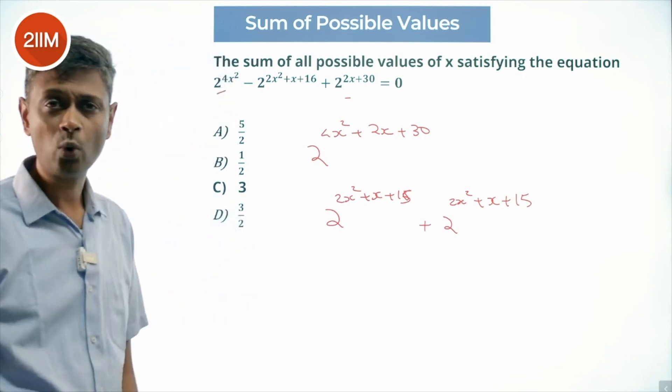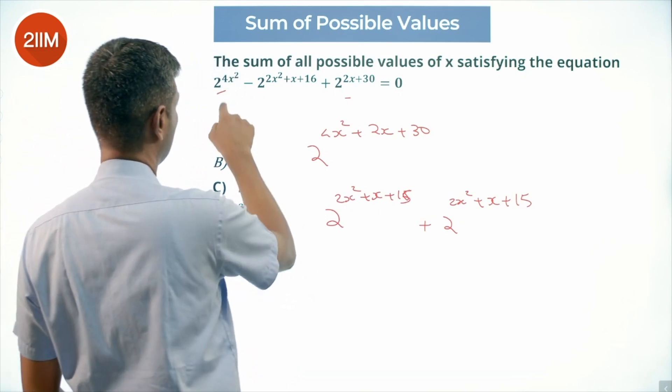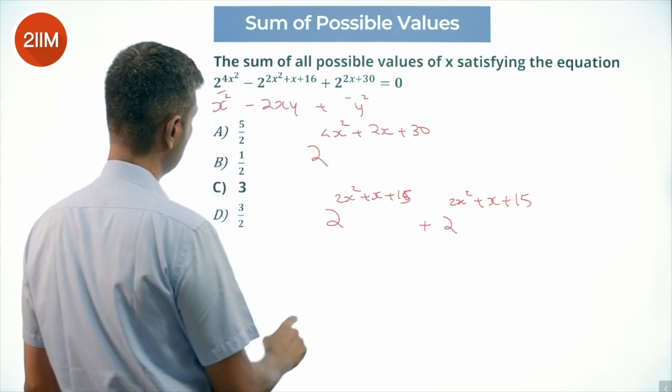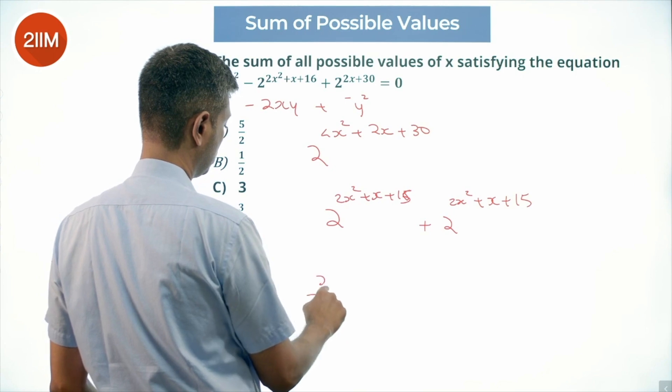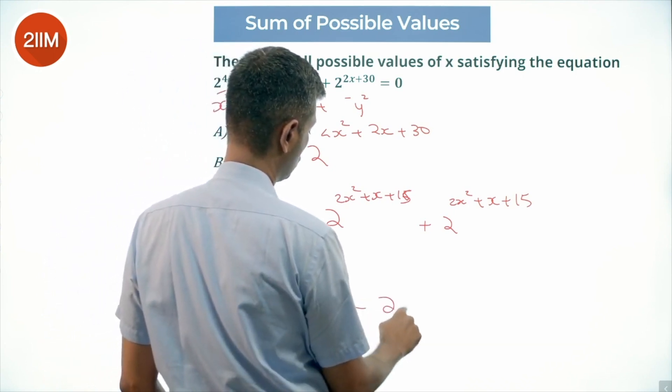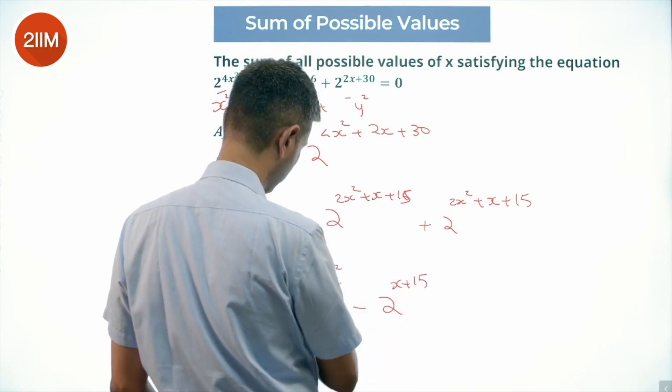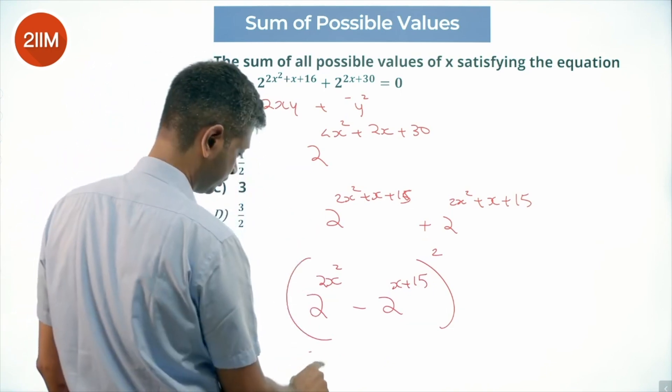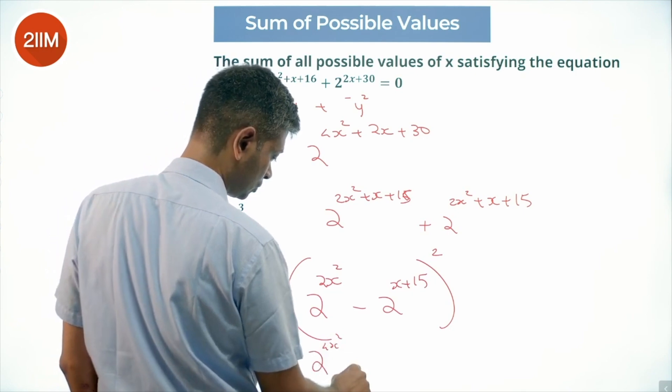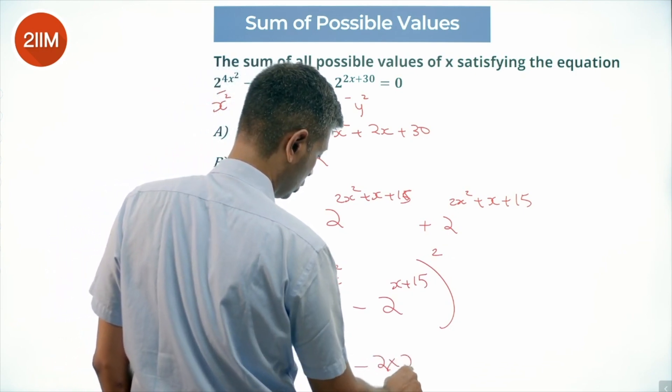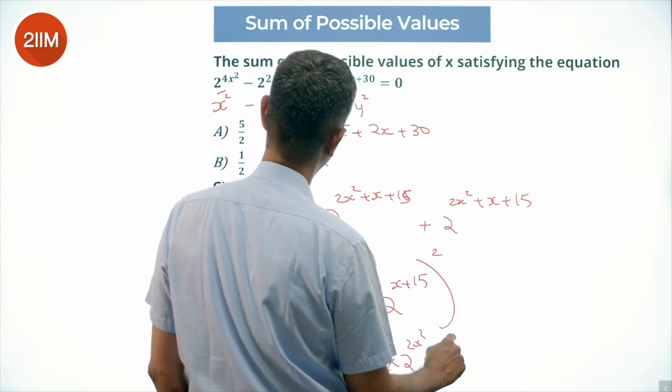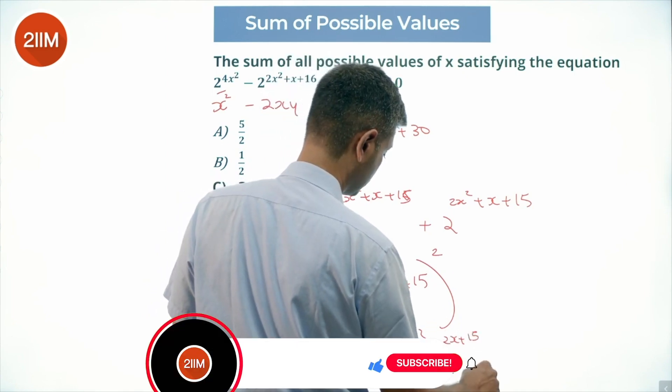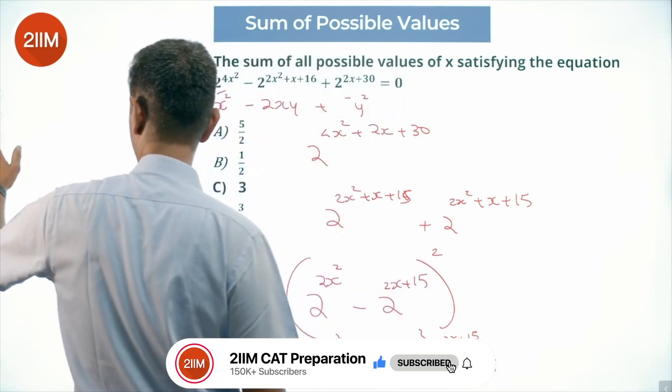This is of the form x minus y the whole square. This is 2x square minus 2xy plus y square or 2 power 2x square minus 2 power x plus 15, only x plus 15, I am squaring this.